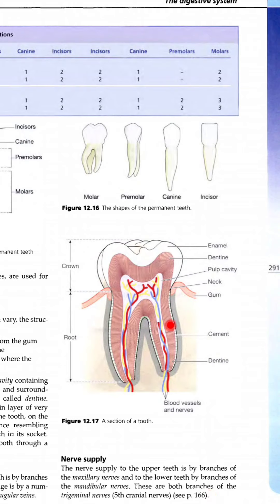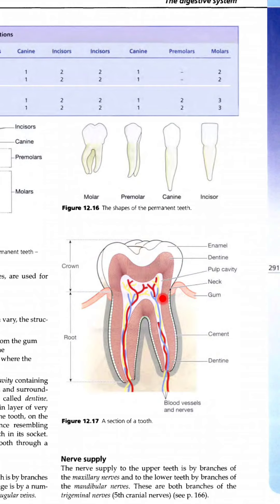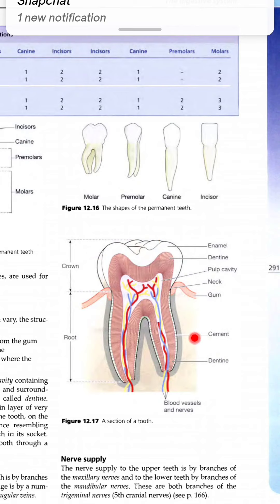Tooth की structure देखो: Crown वाला part सबसे ऊपर होता है। उसके ऊपर एक thin layer होती है जिसको हम enamel बोलते हैं। उसके अंदर dentine वाला part होता है। Dentine के अंदर pulp cavity होती है — pulp cavity में blood vessels, lymph vessels और nerves present होती हैं। यह neck part है और यह gum है — gum के साथ neck वाला part attached होता है। Cement is in the root part — cement पूरे tooth को उसके socket में fix होने में help करता है।